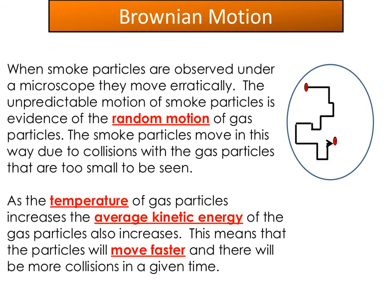Brownian motion was first observed by British botanist Robert Brown when he was studying pollen grains suspended in water. This effect can also be observed when viewing smoke particles under a microscope, where they display erratic, unpredictable, and random motion. This random motion is evidence of collisions with gas particles too small to be seen under the microscope. As the temperature of gas particles increases, their average kinetic energy increases, they move faster, there are more collisions per unit time, and we observe more erratic motion.